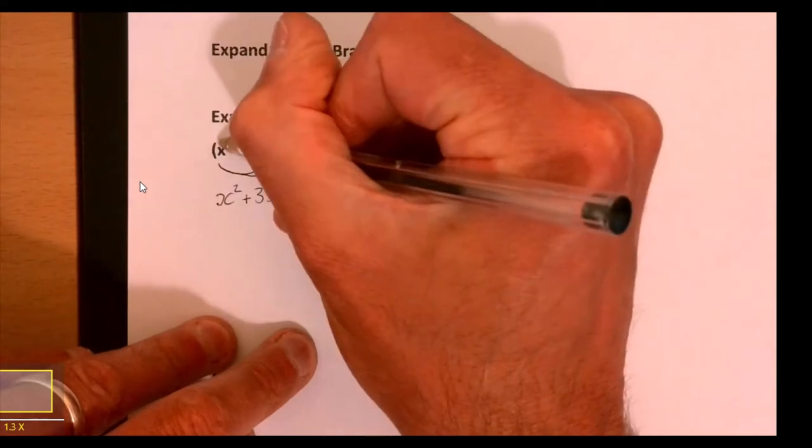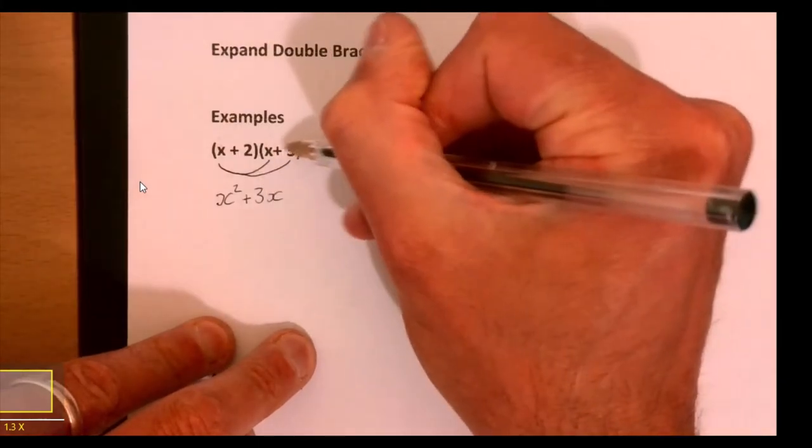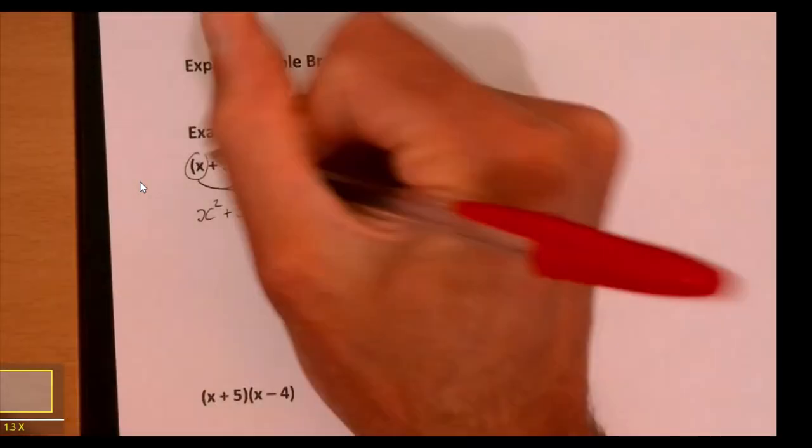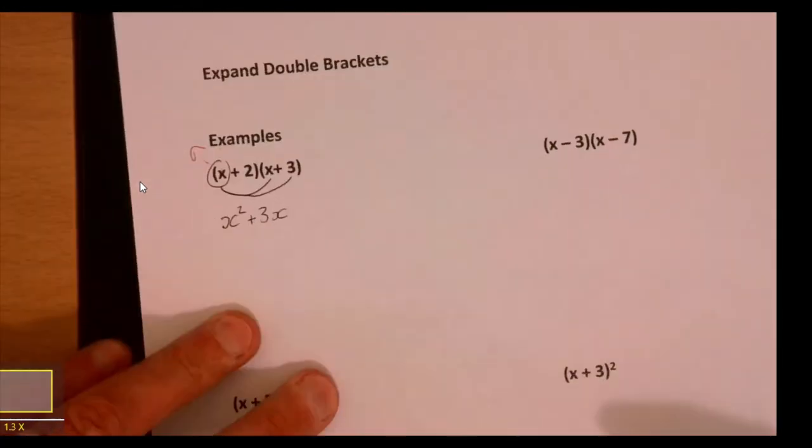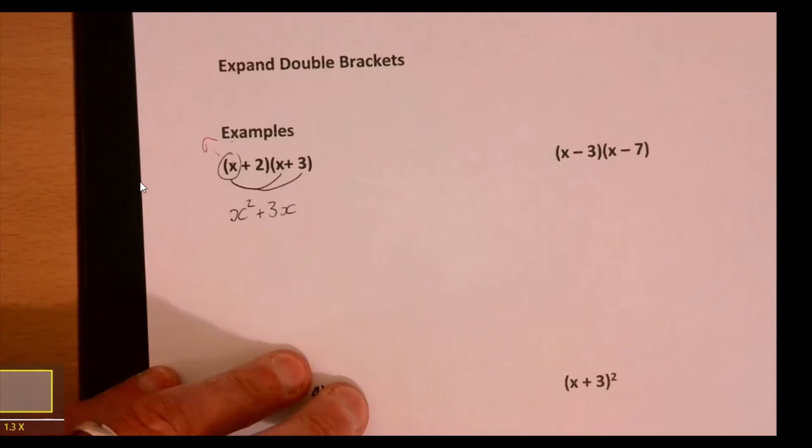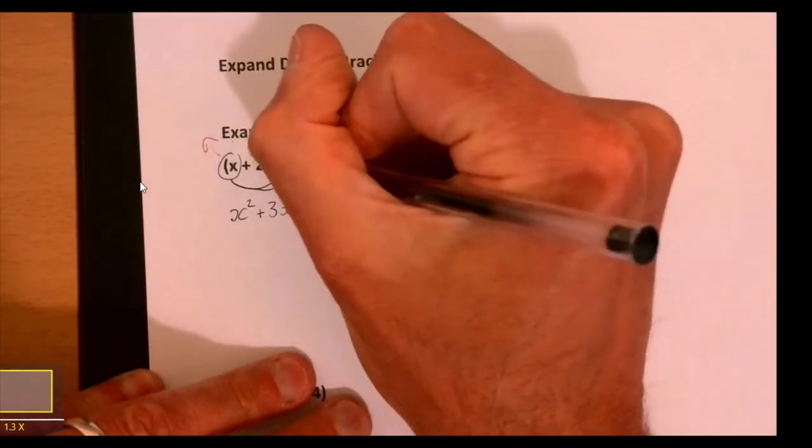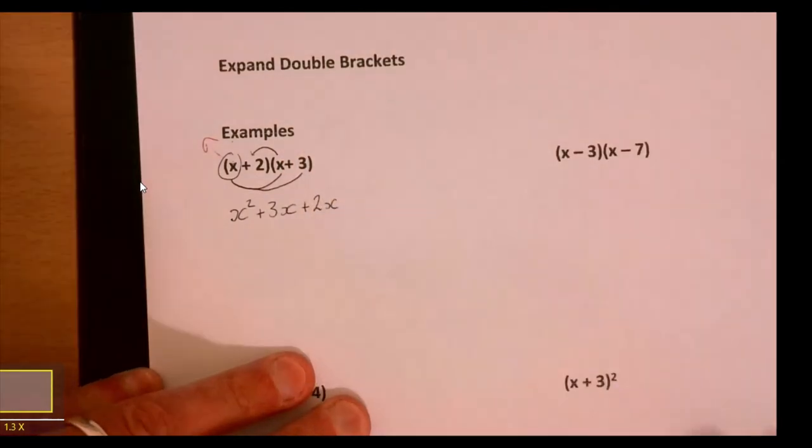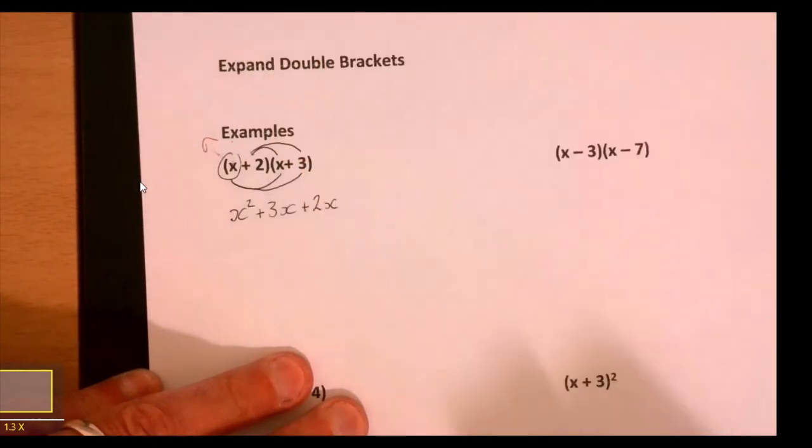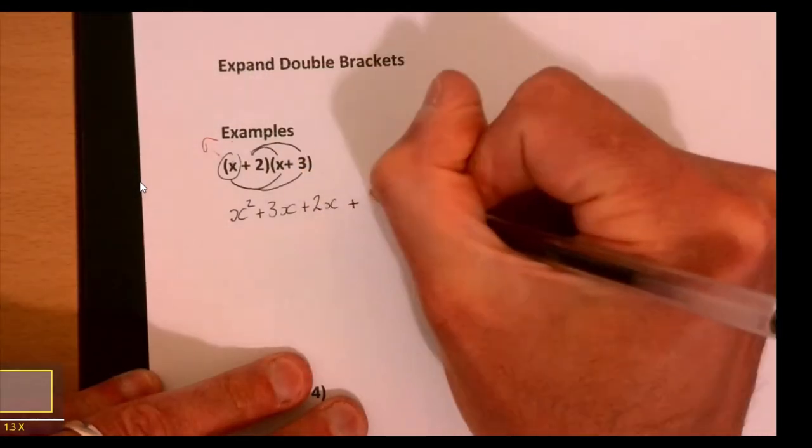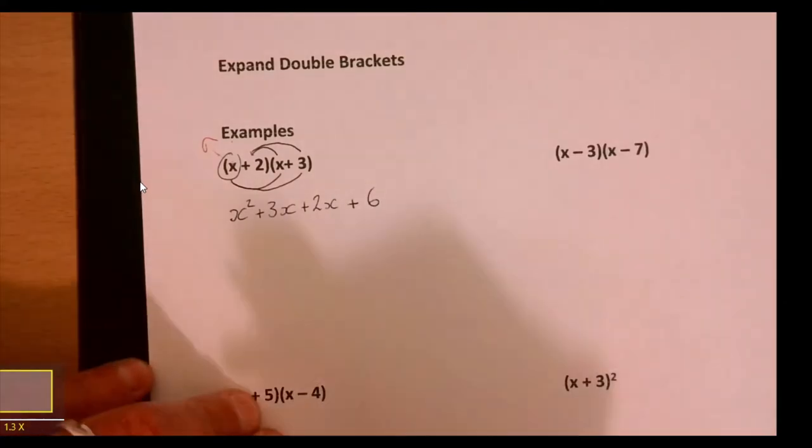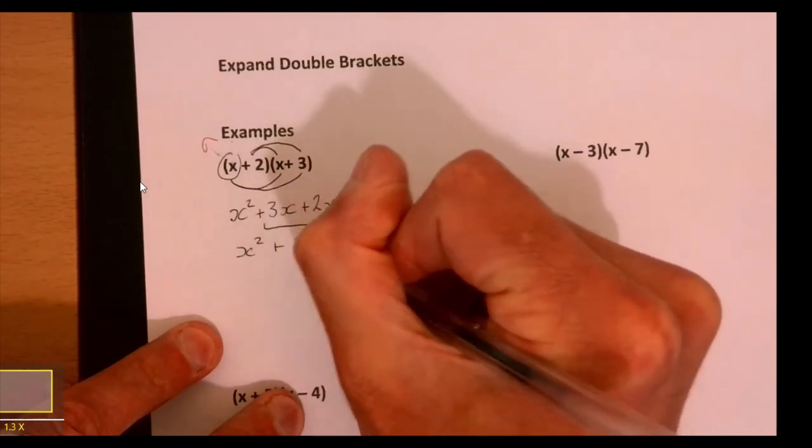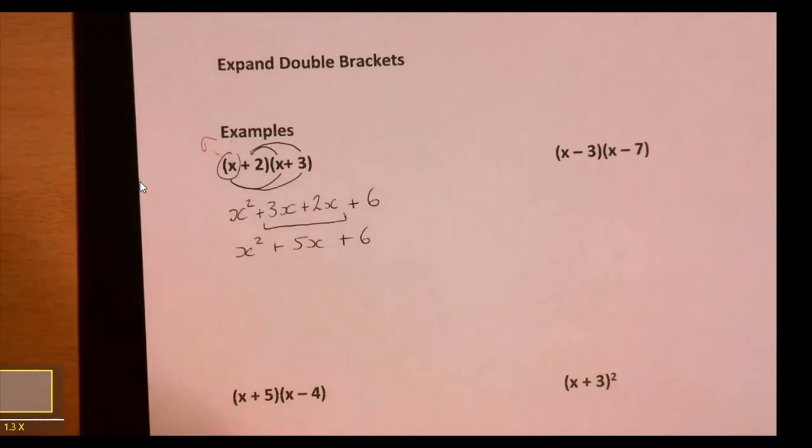This guy here has been connected with everything over here, so he's done. Now let's look at the two. Two times x is plus 2x, and two multiplied by three - remember it's two multiplied by three, don't put five! Group things together: x squared plus 5x plus 6.